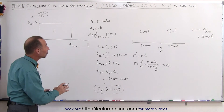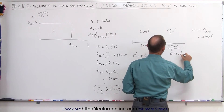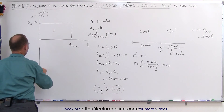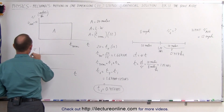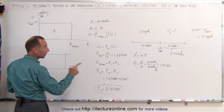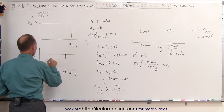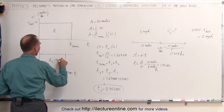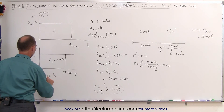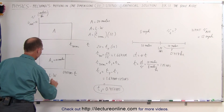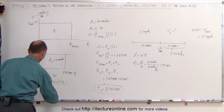Now we know how long the second part of the trip takes: 0.417 hours. We draw a second velocity versus time graph. The velocity of the second part is V2, the time is 0.417 hours, and the area — area 2 — equals 10 miles (the second half of the trip). Area equals length times width, so 10 equals 0.417 hours times V2, giving V2 equals 10 divided by 0.417.